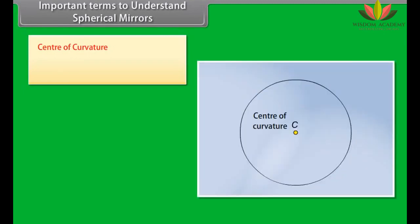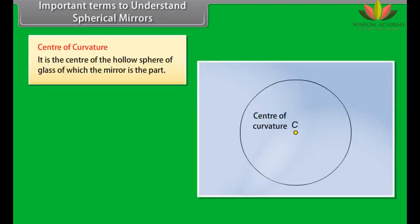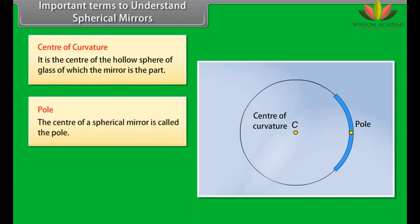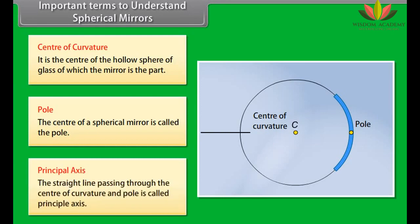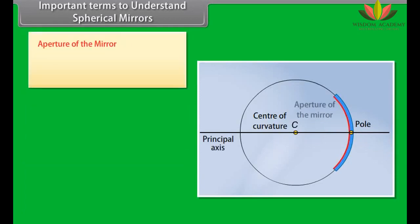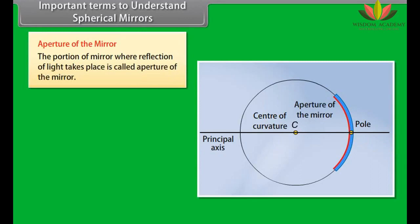The center of curvature is the center of the hollow sphere of glass of which the mirror is a part. The center of a spherical mirror is called the pole. The straight line passing through the center of curvature and the pole is called the principal axis. The portion of the mirror where reflection of light takes place is called the aperture of the mirror.